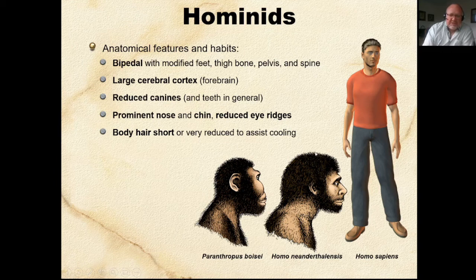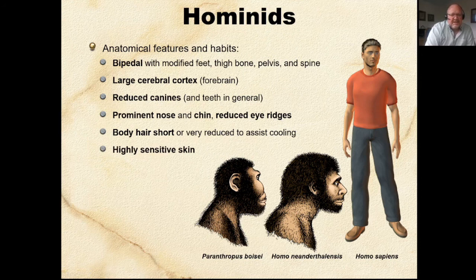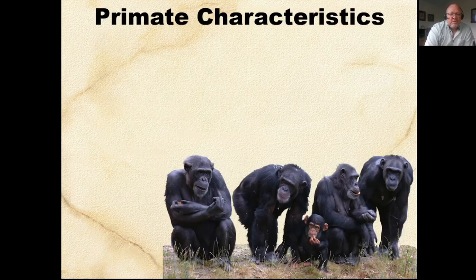Our cerebral cortex is bigger because we do far more cognitive things — fine motor skills, memory, and eventually language, using Broca's area for producing sounds and Wernicke's area for understanding language. Other features include a prominent nose and chin, reduced eye ridges compared to other apes, shorter body hair to assist with perspiration and cooling, highly sensitive skin, and complex social behaviors. The fossil record includes Australopithecus, Paranthropus, Homo, and Ardipithecus.